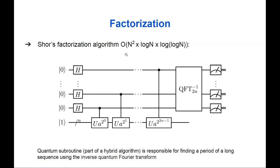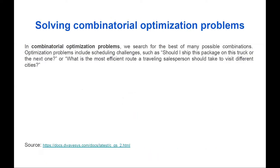In the case of quantum computers, we can do factorization in polynomial time. The pessimistic asymptotic time is O(n² log log n). Shor's factorization algorithm is a hybrid algorithm — some parts run on classical computers, but there is a quantum subroutine responsible for finding the period of a long sequence using the inverse quantum Fourier transform. We could spend a whole lecture explaining Shor's algorithm, but let's move on to other applications.